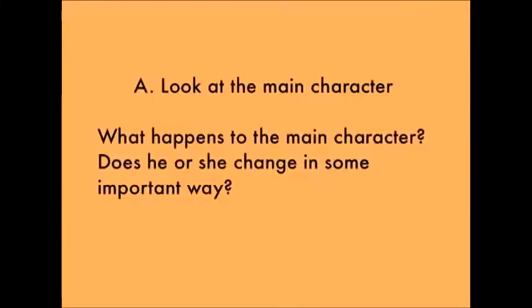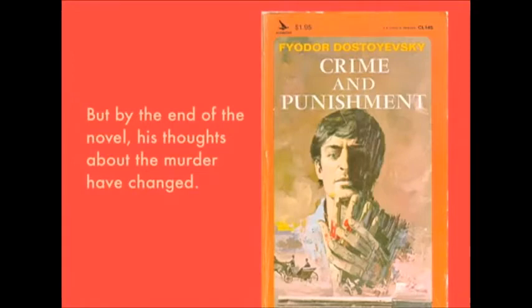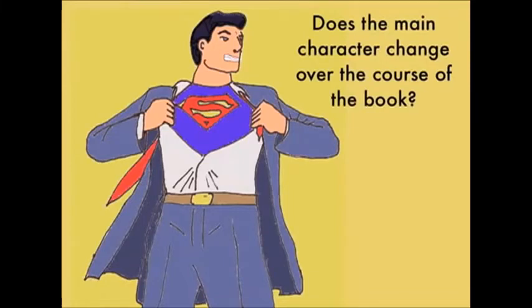Let's see what happens to the main character. Readers usually identify with the main character, especially if he or she is a protagonist, a sympathetic character with whom we identify. If the main character changes over the course of the book in a good way, then a theme could be that those qualities are admirable and that we should be that way in our own lives. If a main character changes in a bad way, then the theme might be to avoid making that character's choices.